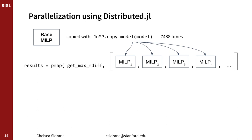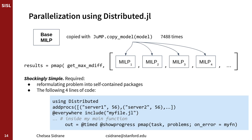We chose to examine how the error of our neural network varied over the domain. This meant discretizing the domain into a bunch of little cells and solving an optimization problem over each of them. We made this computationally feasible by the following: once most of the constraints in the model had been encoded, we copied the model and added the remaining constraints that differentiated each cell — this is important because the encoding process was expensive. We then passed these subproblems to pmap, a function from distributed.jl, and this was shockingly simple. It required reformulating the problem into self-contained units, which took a few days, but other than that it required about just four lines of code to parallelize across however many servers we could. I also like progressmeter.jl for progress bars during long tasks.